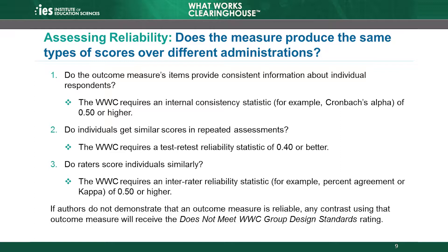An example of an internal consistency statistic is Cronbach's Alpha. The second way is to demonstrate sufficient test-retest reliability. Test-retest reliability measures to what extent the same individuals get similar scores in repeated assessments. The WWC requires a test-retest reliability statistic of 0.4 or higher. The third way to demonstrate that an outcome measure is reliable is by showing that different raters scored the same individual similarly, a measure called inter-rater reliability. The WWC requires that inter-rater reliability, often measured as the percent agreement between raters or using a measure called kappa, is 0.5 or higher.